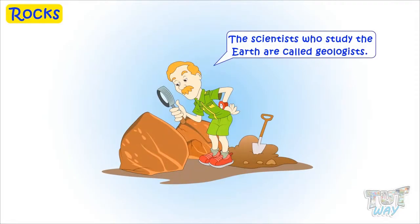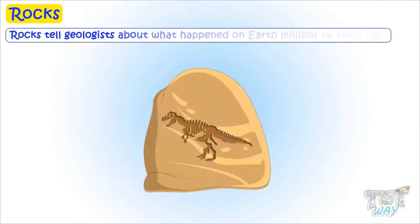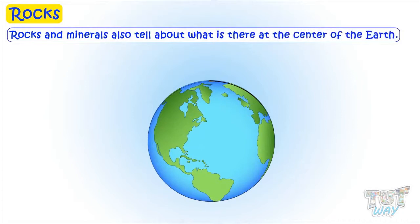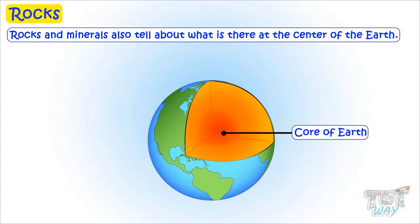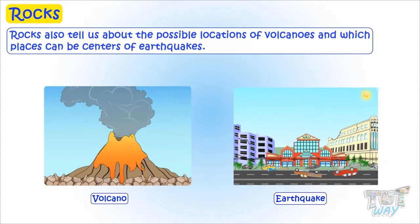The scientists who study the earth are called geologists. Geologists study about rocks and minerals as rocks and minerals are the best examples to understand the evolution of our earth. Rocks tell geologists about what happened on earth millions of years ago. Rocks and minerals also tell us about what is there at the center of the earth, and about the possible locations of volcanoes and which places can be centers of earthquakes.